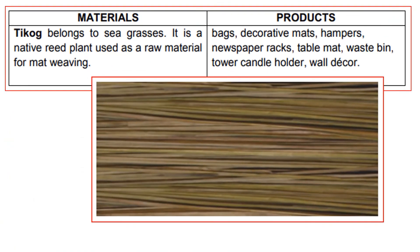The next material is ticom, which belongs to seagrasses. It is a native reed plant used as a straw material for mat weaving. It can be produced into bags, decorative mats, hampers, newspaper racks, table mats, waste bins, tower candle holders, wall decor, and more.